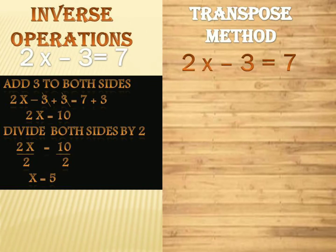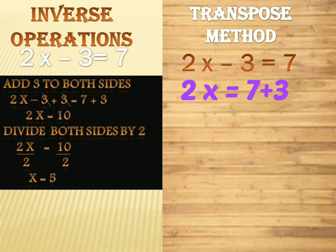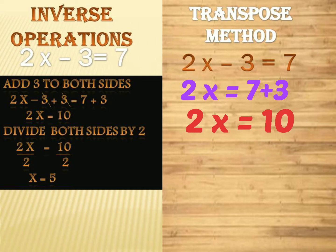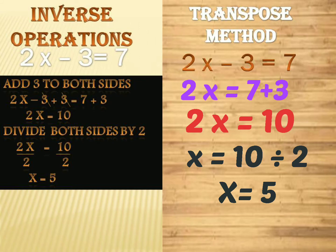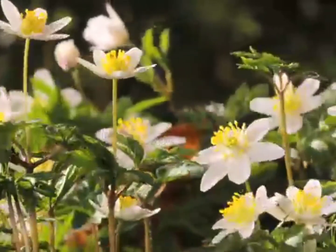Now let's see how to apply this concept by solving an equation. Here we are going to use the transpose method for the equation 2x minus 3 is equal to 7, which we already solved using inverse operations. The term 3, subtracted on the left hand side, is transposed to add on the right hand side, giving 2x is equal to 7 plus 3, which equals 10. Next, the 2 multiplied on the left hand side is transposed to divide on the right hand side, giving x is equal to 10 divided by 2, which equals 5.